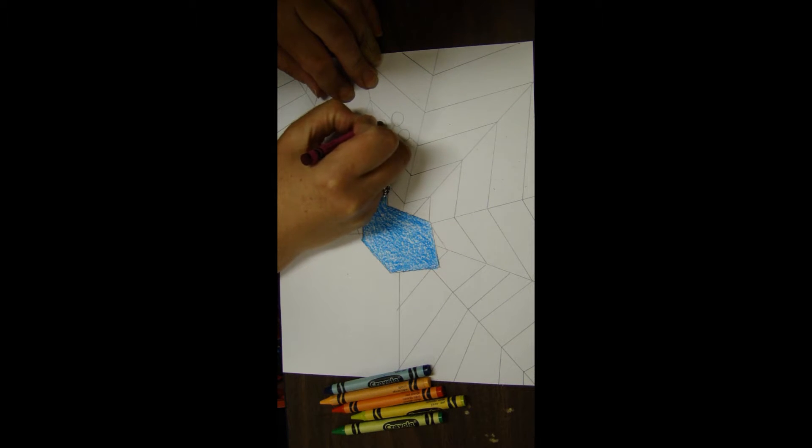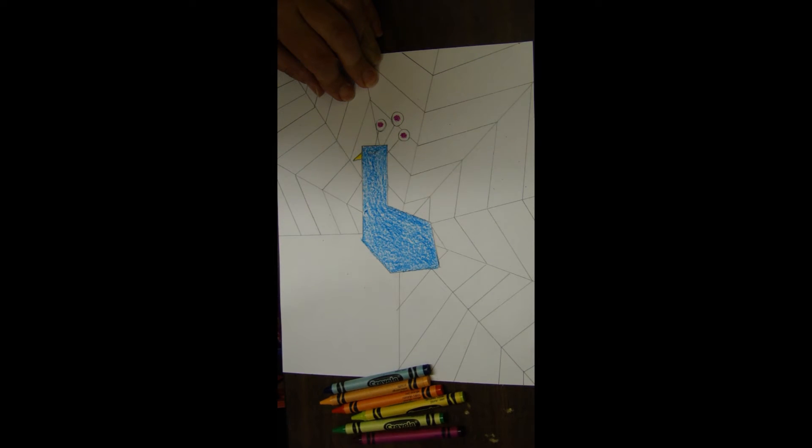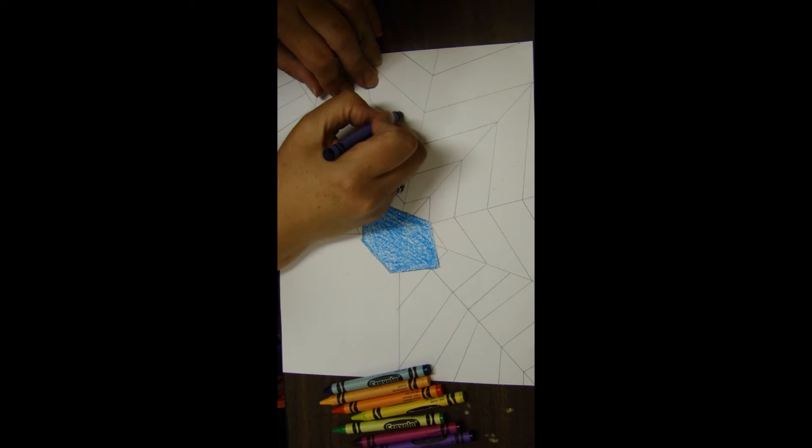I'm going to color in the feathers that are coming off the head, adding a little bit of a magenta color and then circling around them in the blue color.